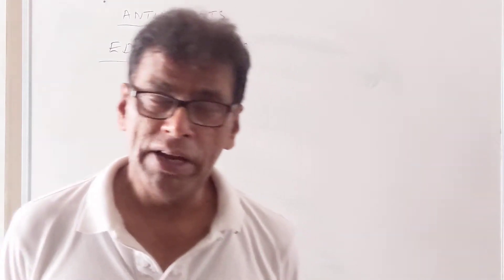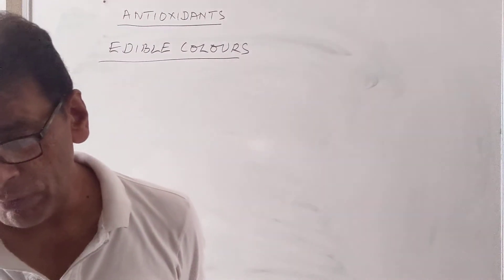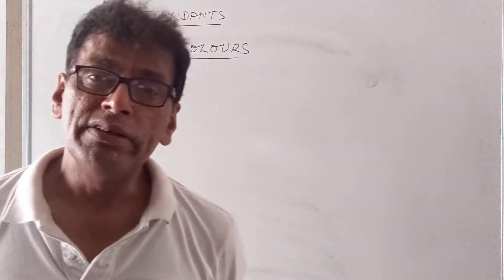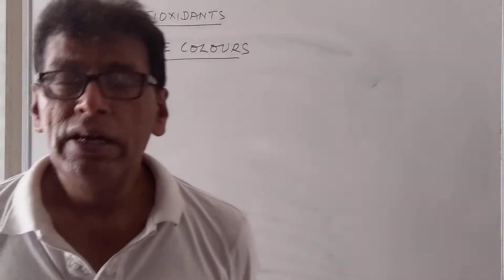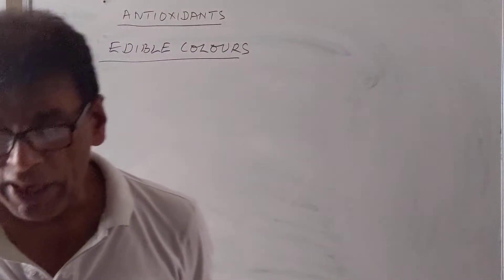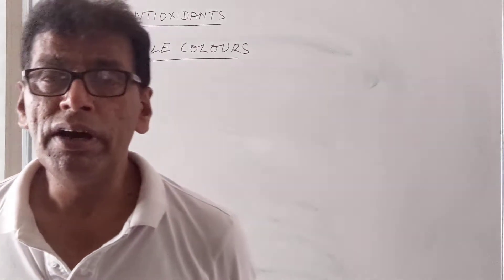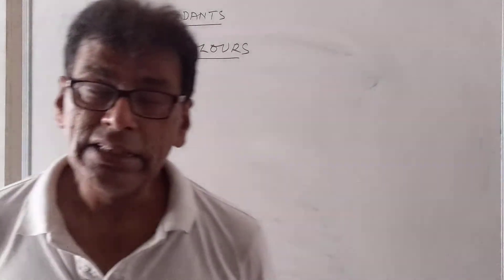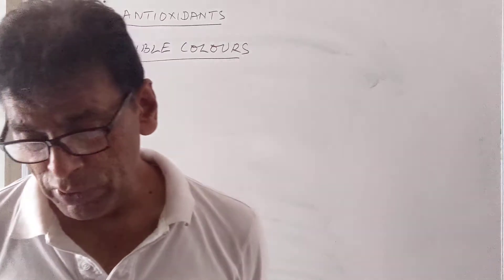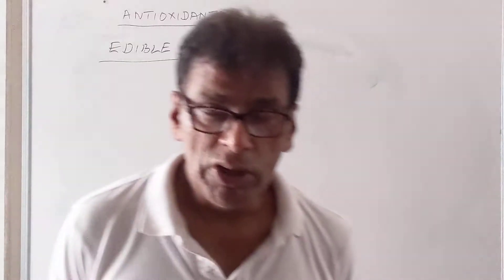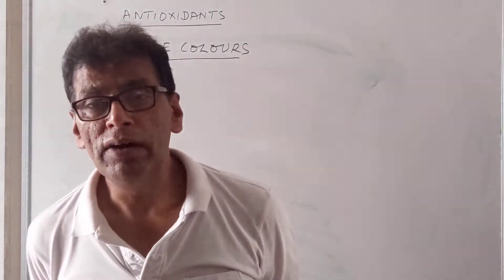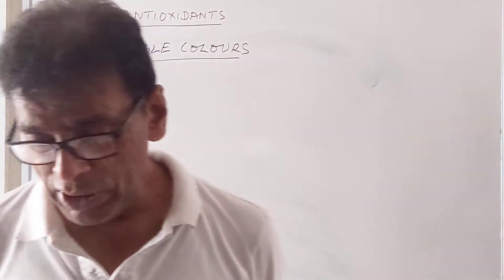The main condition for using a compound as an edible color is that it should not produce any harm to living tissue or the organism — it should not be carcinogenic. Generally, they are colored dyes used in food items, but their use should be avoided where possible, as some have been found to be carcinogenic.